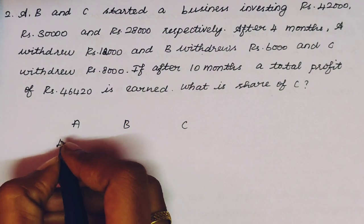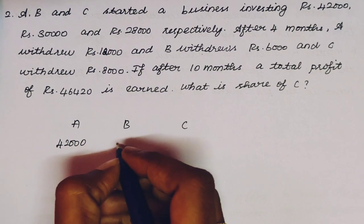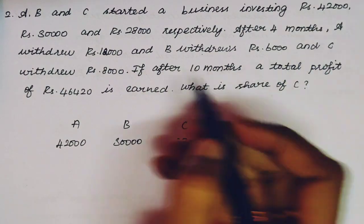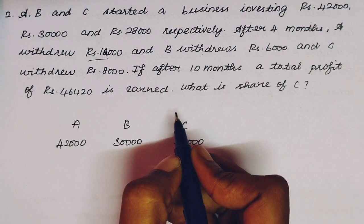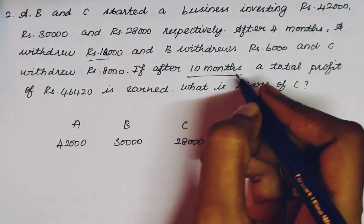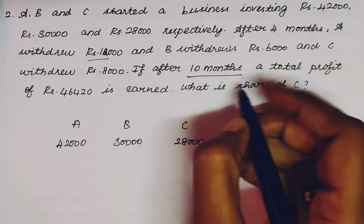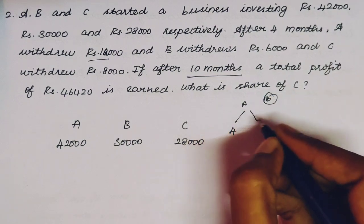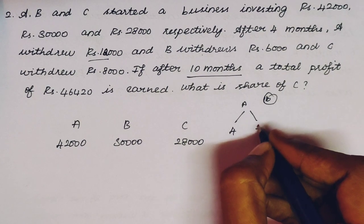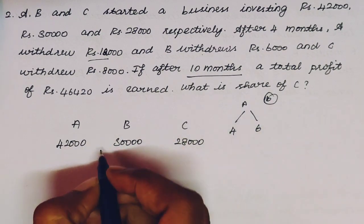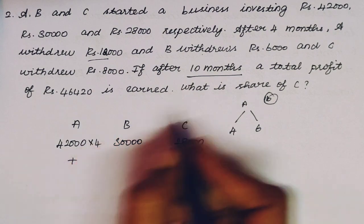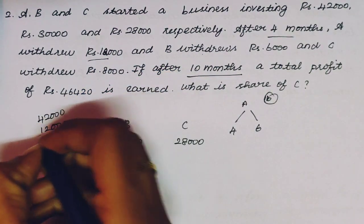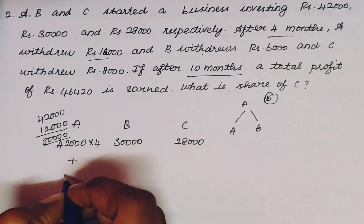In total we have 3 members. First, we note the initial investments: A = Rs. 42,000, B = Rs. 30,000, C = Rs. 28,000. The total period is 10 months. The first 4 months use the initial investment; the next 6 months reflect the investment after withdrawal. For A: 42,000 for 4 months, then 42,000 − 12,000 = 30,000 for 6 months.